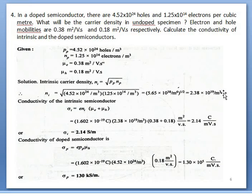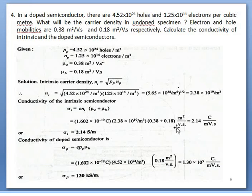Electron and hole mobilities are given, with electron mobility higher than hole mobility. To calculate the conductivity of intrinsic semiconductor, sigma_i equals this equation. Substituting Ni (determined from the first part) and the given mobilities, conductivity is obtained after simplification — in units of siemens per meter, or ohm⁻¹·m⁻¹.